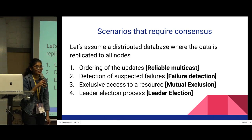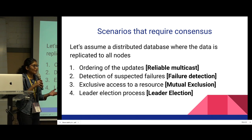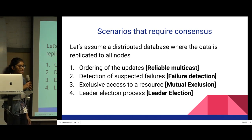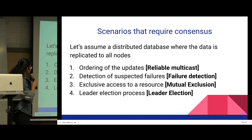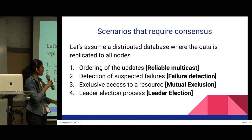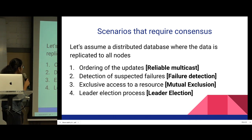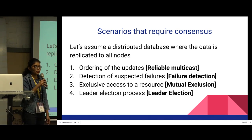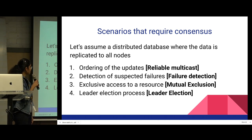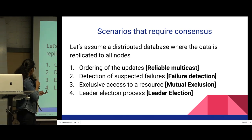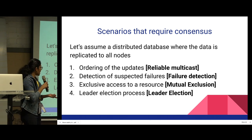Why do we need consensus? Let's take a sample distributed database where the data is replicated across all data nodes. In any such distributed scenario, we will encounter these problems: ordering of updates — the order of updates should be the same for all data nodes so that the data will be consistent. And in any distributed system, failure detection is important because for the distributed system to act as a single entity, they must be aware of the cluster membership.